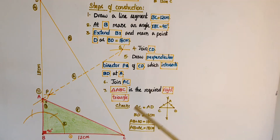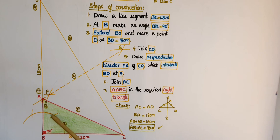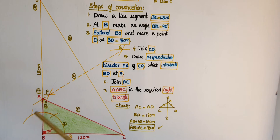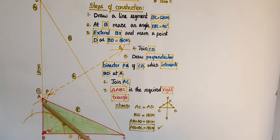To construct a 90 degree angle, first draw a line segment BC equal to 12 centimeters. Taking B as center, draw an arc with some radius intersecting BC at a point. Taking that point as center, draw another arc with the same radius, then taking two points as centers draw two arcs with radius more than half the distance between those points. The intersection point is X. Join B and X, so angle XBC equals 90 degrees.